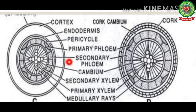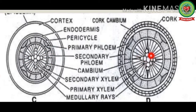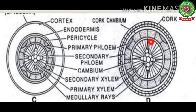The medullary rays are responsible for translocation of food and water towards the inner as well as outer tissues. The primary xylem gets embedded in the secondary xylem, and the primary phloem gets crushed due to pressure generated by the secondary phloem. The continuous lines present between secondary xylem and secondary phloem represent the medullary rays.